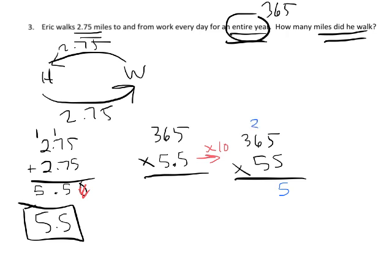So 5 times 5 is 25, carry the 2. 5 times 6 is 30 plus 2 is 32, carry that 3. 5 times 3 is 15 plus 3 is 18.